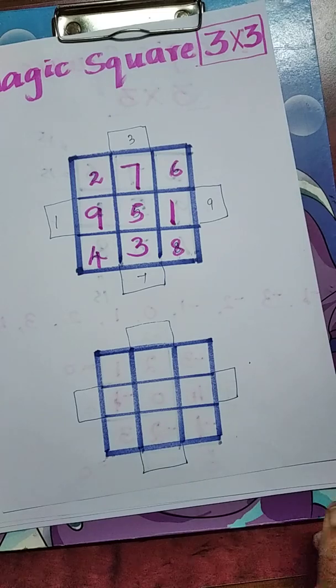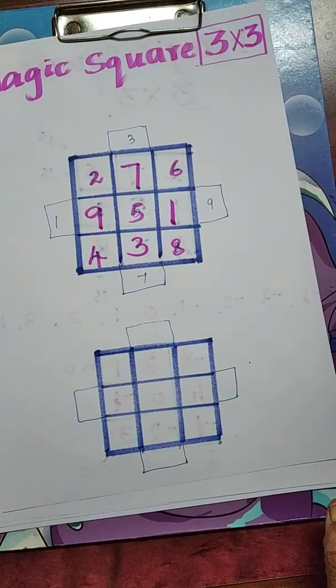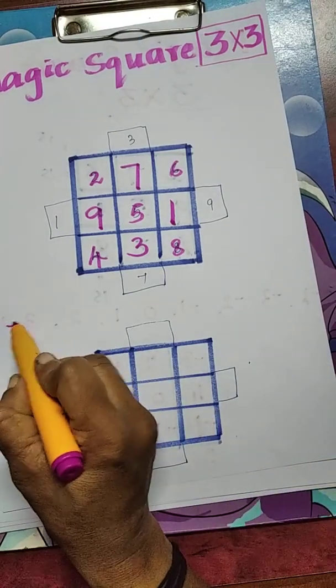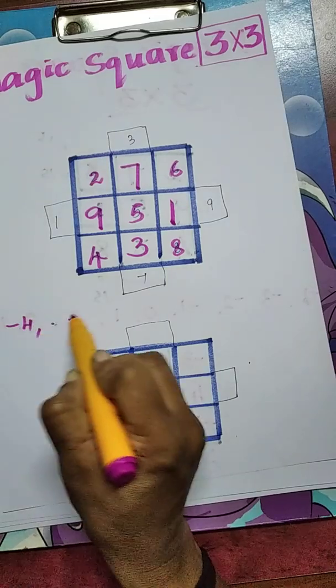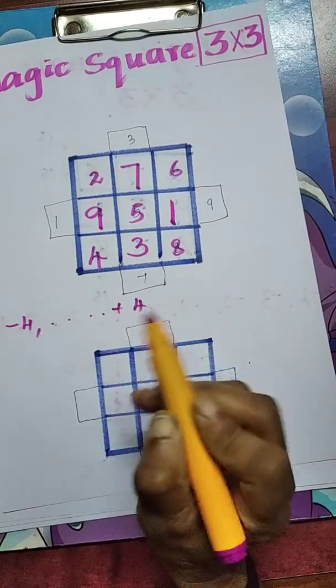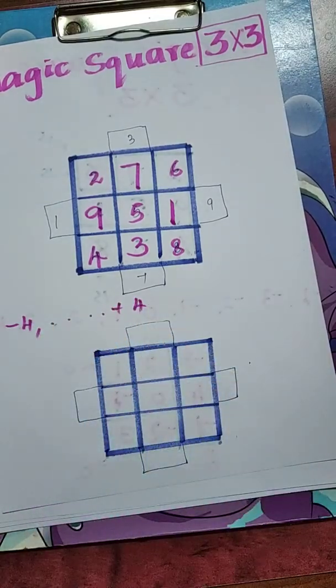Similarly, here we can use integers. One example I will take: minus 4 to plus 4. In between, total 9 numbers are there.